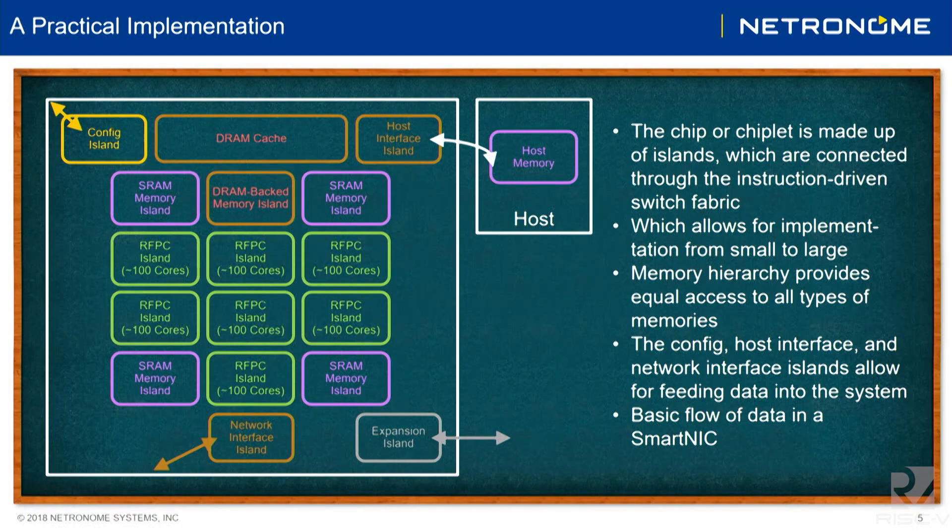Basic flow of a packet — I just wanted to give you some idea of how a packet would travel through the system. In today's marketplace, 100-gig NICs are commonplace. We produce 25, 50, and 100-gig NICs today. A packet comes into the system through the network port. For a 100-gig packet, that means a 64-byte packet every 3 nanoseconds.